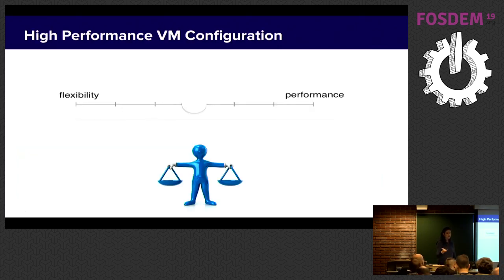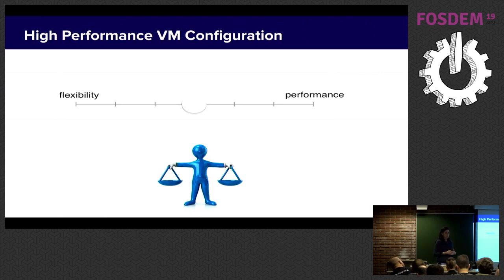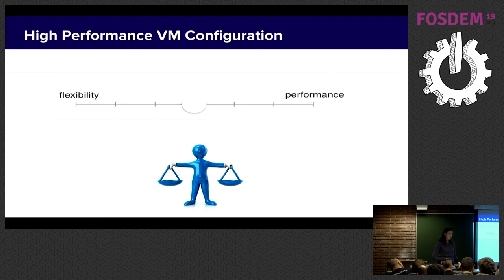You might ask: if it's so easy to create a high performance VM, just by choosing the type and setting a few manual things — why not create all VMs as high performance? The answer is that as with everything in life, there is a price to pay. The price for high performance VMs is flexibility. There is a balance between performance and flexibility — the higher the performance, usually the less virtualization flexibility you will have.